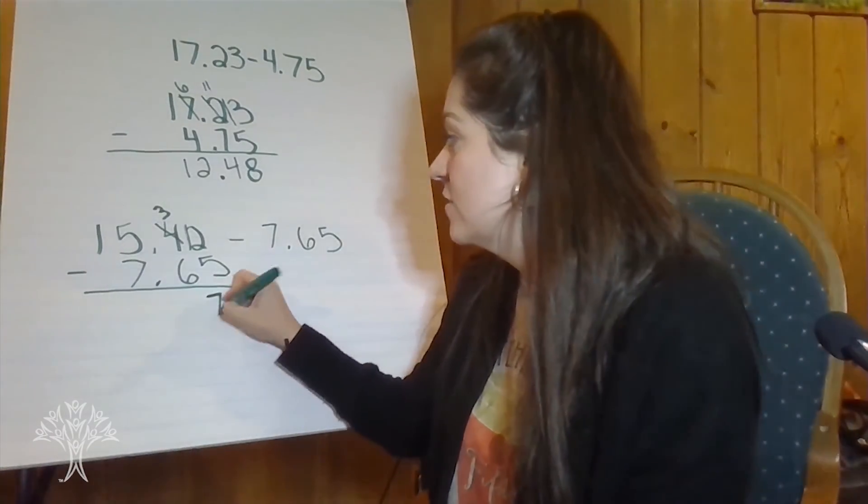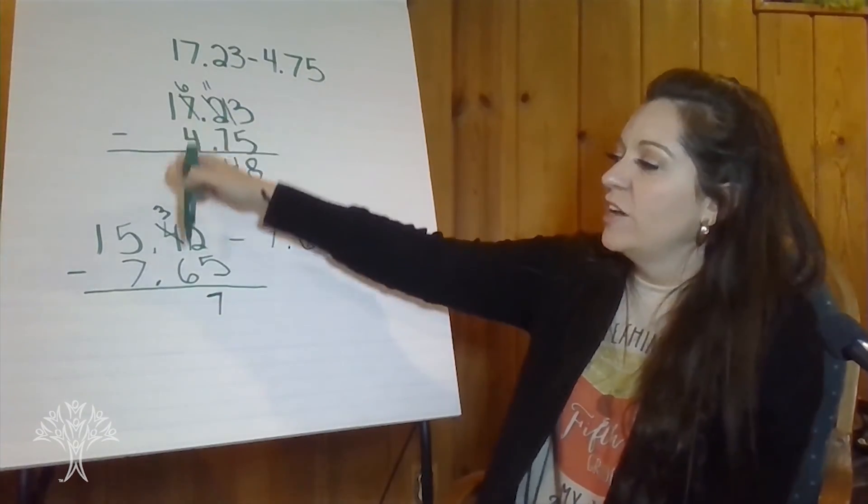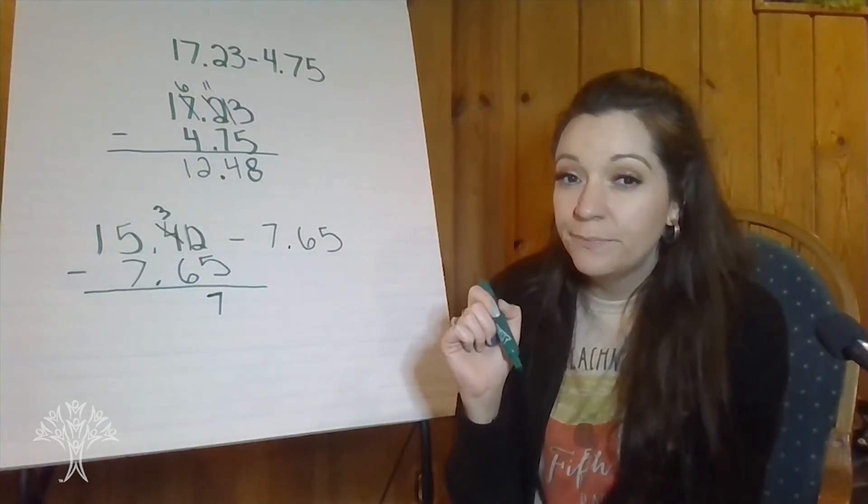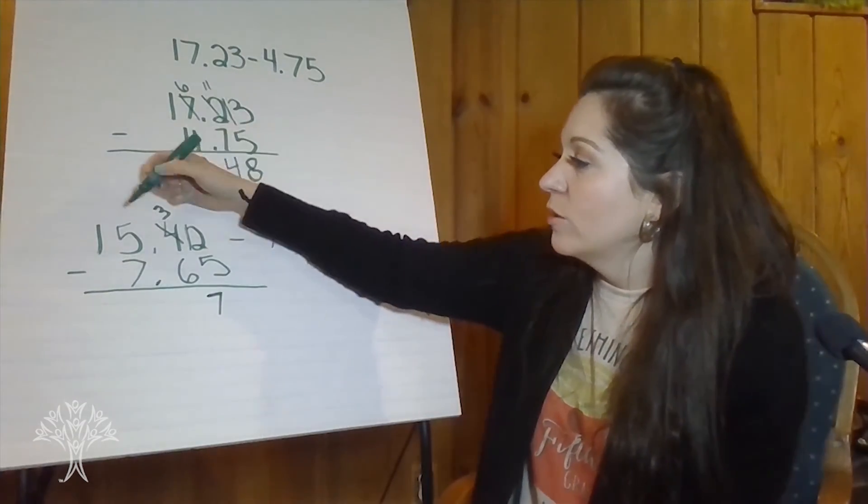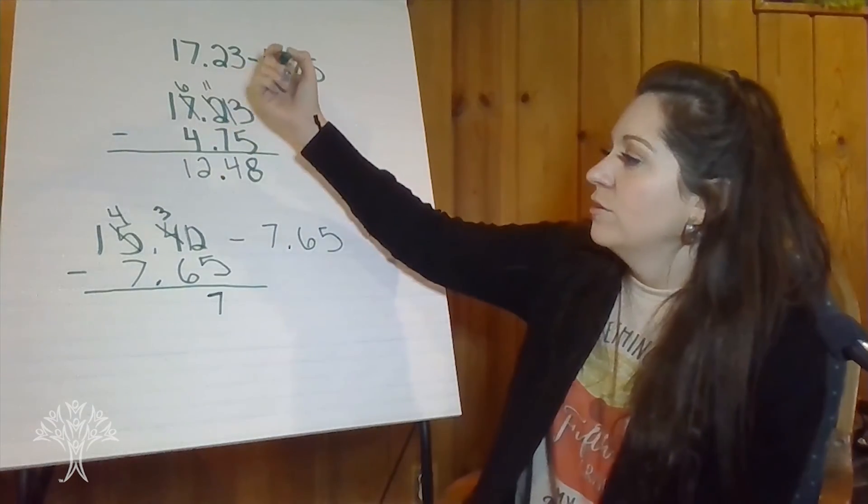Okay, seven hundredths. Good. Three tenths take away six tenths. Can you do that? Not yet. Okay, so let's regroup from the ones. Four tenths.